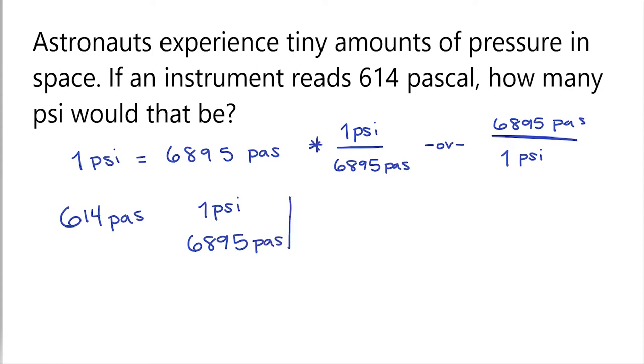Now we can go ahead and solve this problem. So we want to take our tops and multiply those together. So 614 times 1 is still just 614. Next, we have to multiply our units. So Pascal times PSI. This will all be over 6,895 Pascal.